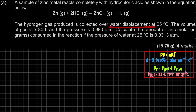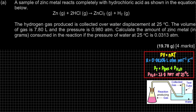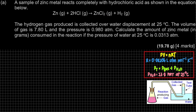The water displacement method is a method where the reactant reacts and produces a product, usually a gas, which is collected over water in an inverted test tube. That's why it's called the water displacement method. The total pressure is not only from the gas produced in the reaction — it also includes the vapor pressure of water, P_H₂O.